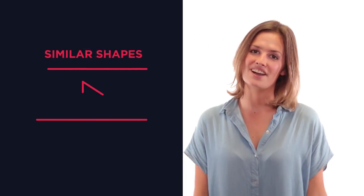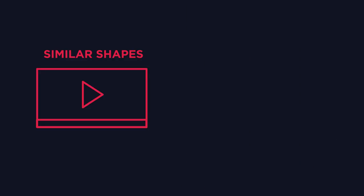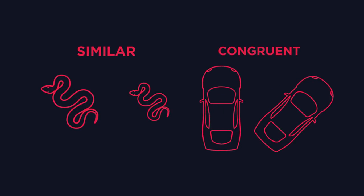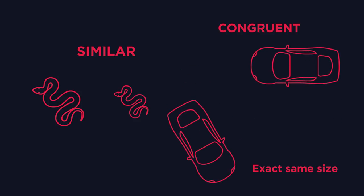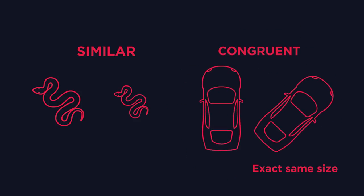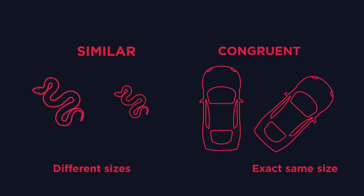In another video we'll look at how to use similar shapes to make calculations easier. For now, just remember that congruent shapes are the exact same size but can be rotated, reflected, or moved — congruent cars. Whereas similar shapes can also be different sizes; the sides are just increased or decreased by the exact same ratio — scaly similar snakes.